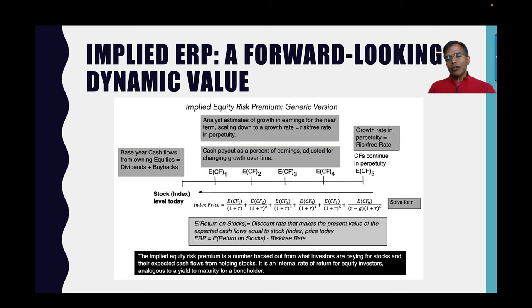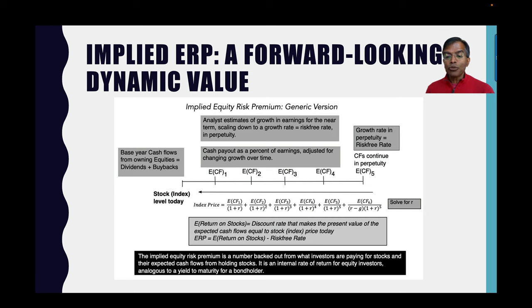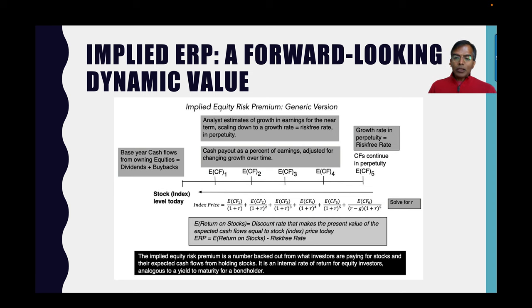That's precisely what I've tried to do for the last 30 years. At the start of every year, I look at the level of the index — that's what we're paying to buy stocks today. Rather than coupons, you're going to get cash flows from holding these stocks, either as dividends or buybacks. So I start with the dividends and buybacks for the most recent time period, which is all I know. Then I forecast growth in those dividends and buybacks based on what analysts are estimating for earnings growth for the stocks in the index. Those are estimates — they could be wrong — but I'm building them in to get expected cash flows in year one, year two, year three.